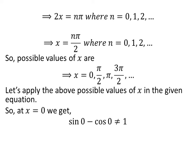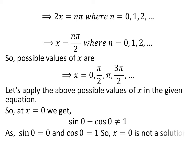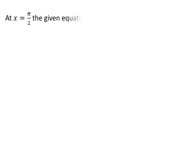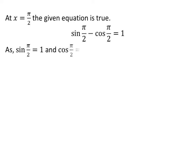Applying x equal to 0: we get sin of 0 minus cosine of 0, which is not equal to 1. Since sin of 0 is 0 and cosine of 0 is 1, x equal to 0 is not a solution. Now trying x equal to half of pi: the equation holds true, since sin of half of pi is 1 and cosine of half of pi is 0. So x equal to half of pi is a solution.